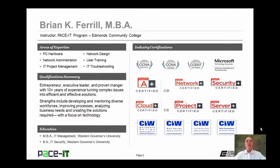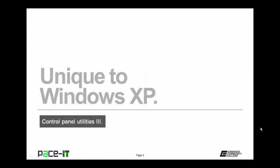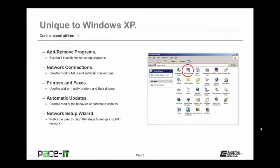Hello, I'm Brian Farrell, and welcome to Pace IT's session on Control Panel Utilities, Part 3. Today we're going to discuss utilities unique to Windows XP, unique to Windows Vista, and unique to Windows 7. We'll begin with utilities unique to Windows XP. The first is the Add Remove Programs utility — the best built-in utility for removing programs from Windows XP, and you can also add operating system features with it.